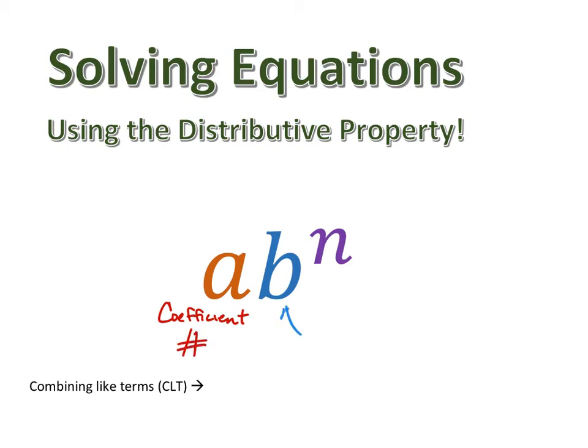The number that has the exponent next to it is called the base or the variable. This is the letter. Whatever letter it is, generally speaking, that's going to be your base or variable. Then you have the exponent or power.